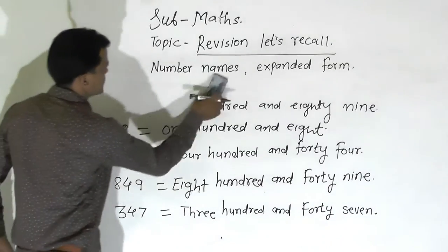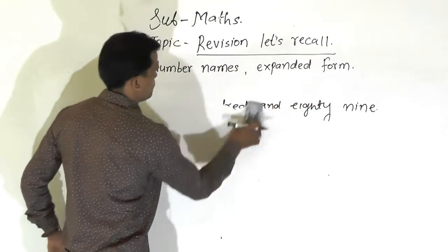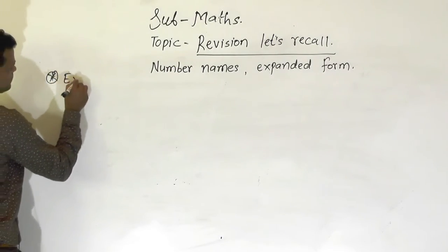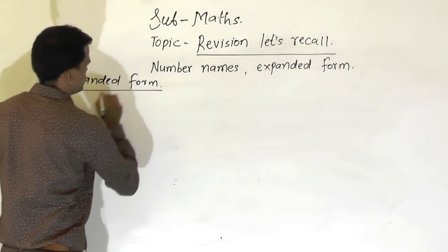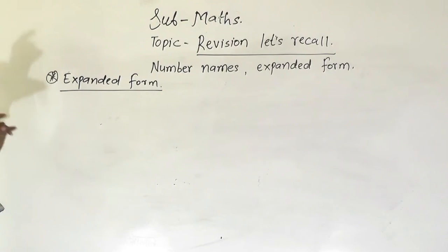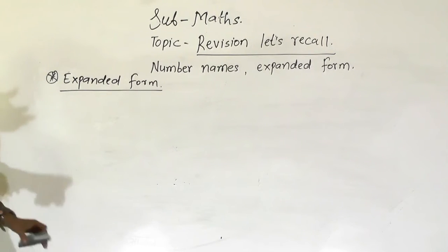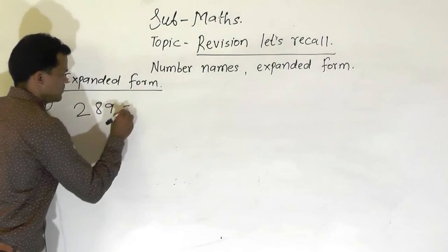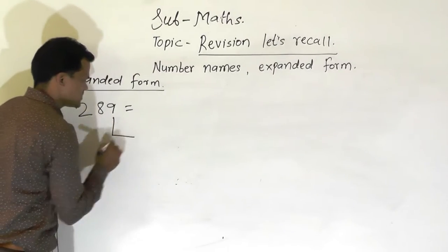Now we will see the next concept that we also learnt in the previous class: that is expanded form. Expanded form of a number. For this concept, the most important thing is place value. We have to identify the place value, then we can write that number in expanded form. I am writing here the number 289. You know that place value depends on the place.